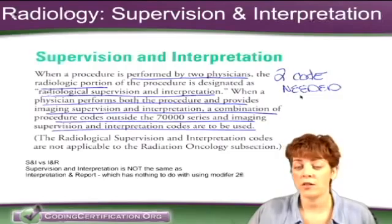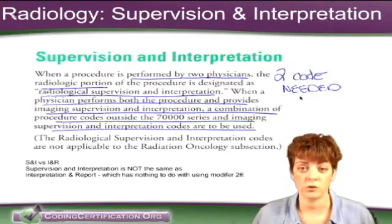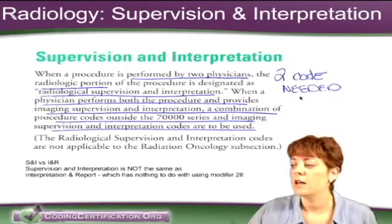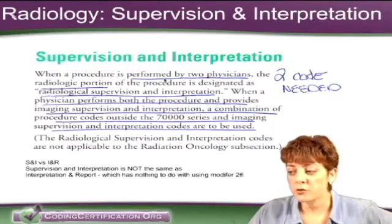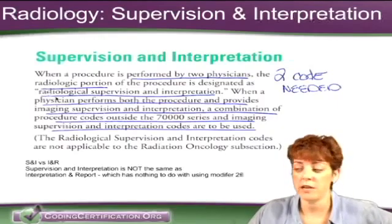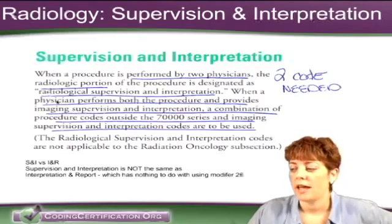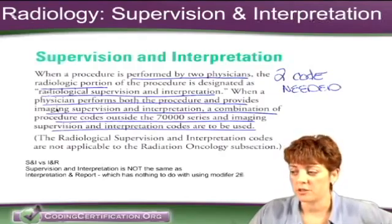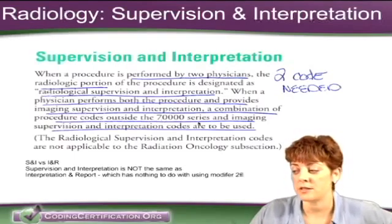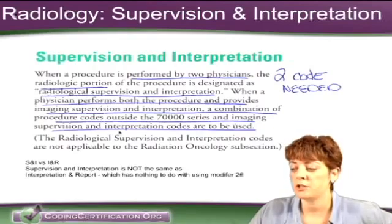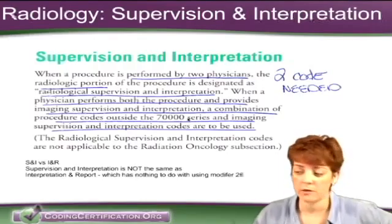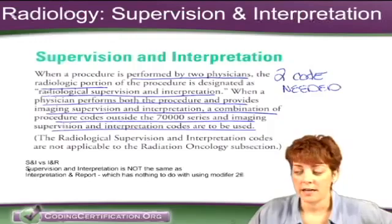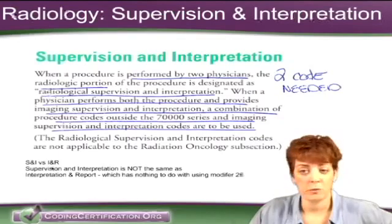Whenever you see that phrase, that's all it means: I'm part of a two code story. If you did the other part, code that too. The official definition reads: when a procedure is performed by two physicians, the radiologic portion is designated as radiological supervision and interpretation. When a physician performs both the procedure and provides imaging supervision and interpretation, a combination of procedure codes outside the 70,000 series and imaging supervision and interpretation codes are to be used. Outside the 70,000 series means those surgery-type codes. The bottom line is S&I — supervision and interpretation — is not interpretation and report. They're two different things.